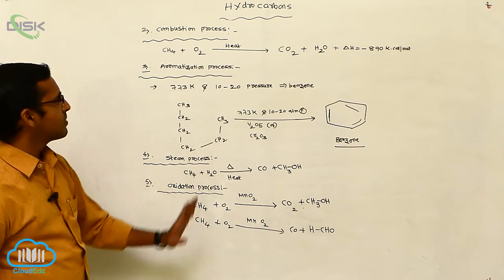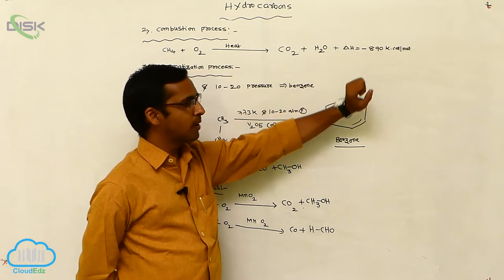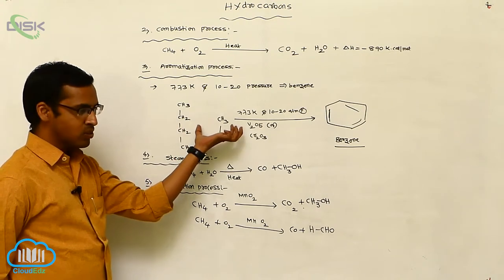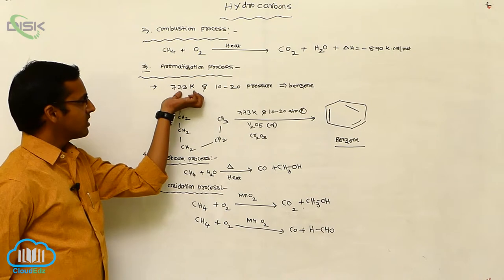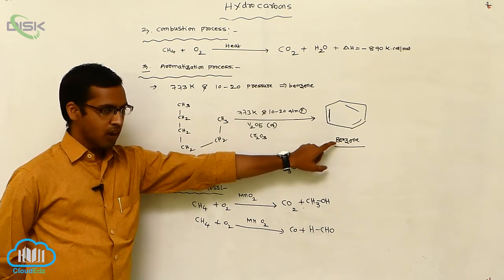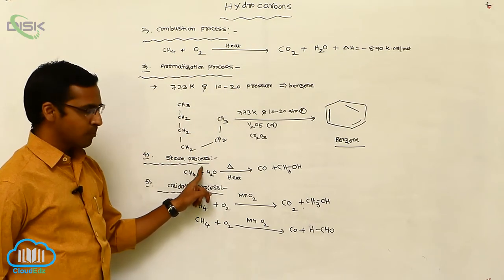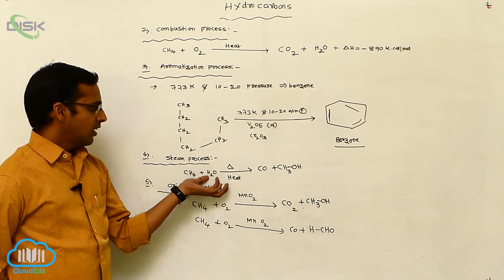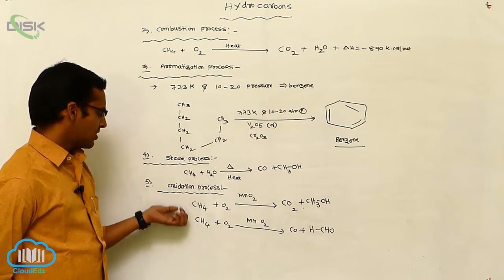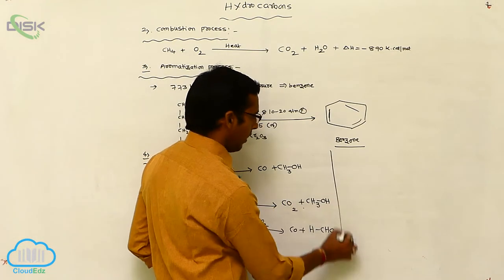The alkanes participate in a substitution reaction as well as combustion. During combustion, more amount of heat is liberated. In the aromatization process, more than six carbons are heated at 773 Kelvin and 10 to 20 atmospheric pressure to produce an aromatic compound. In the steam process, hydrocarbons heated in the presence of water produce carbon monoxide as a byproduct. And oxidation gives various products in the presence of a catalyst.